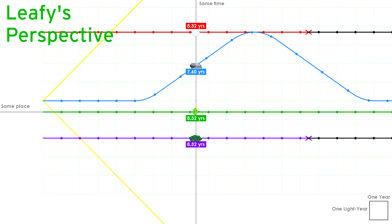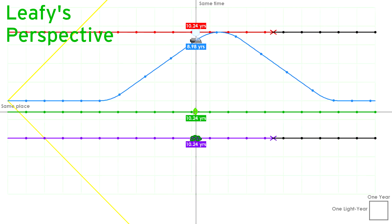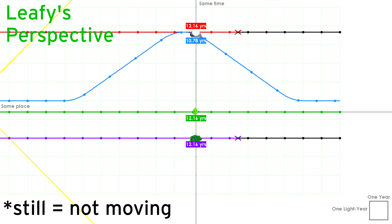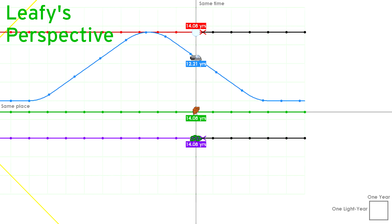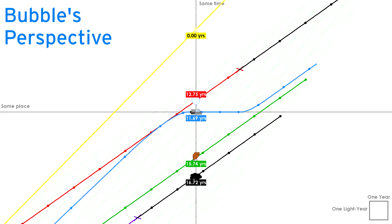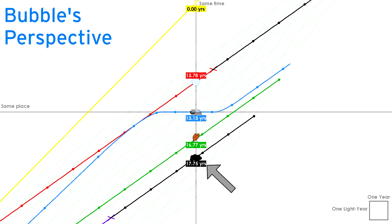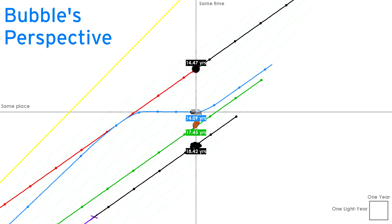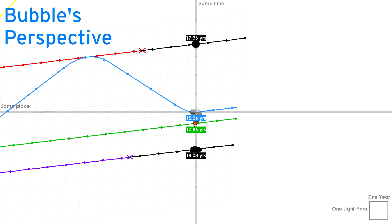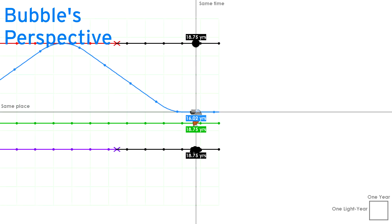Also notice that even though Leafy, Yoyoland, and Ice Cube's star are all still relative to each other, and are all the same age relative to each other, Bubble sees them as very different ages, with Yoyoland being the oldest. By the time Bubble gets back home, Leafy is already 17 years old, while Bubble is merely 15, despite the fact that they were born at the same time.